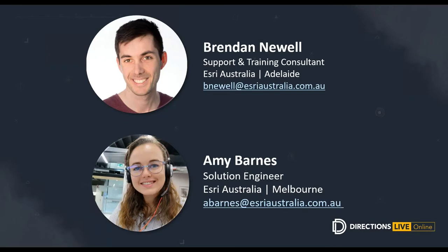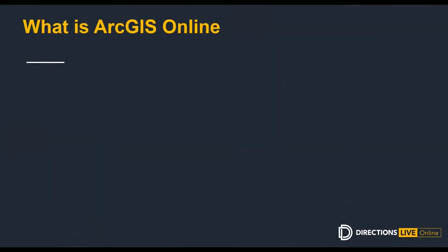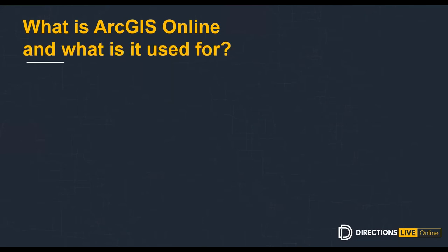Thank you Laura and welcome everyone. Let's jump straight into ArcGIS Online. ArcGIS Online is a cloud-based mapping and analysis solution. We can use it to make maps, analyze data, and share and collaborate. We have access to workflow-specific apps, maps and data from around the globe, and tools for being mobile in the field — online and in offline environments. Your data and maps are stored in a secure and private infrastructure hosted by Esri and can be configured to meet your mapping requirements.